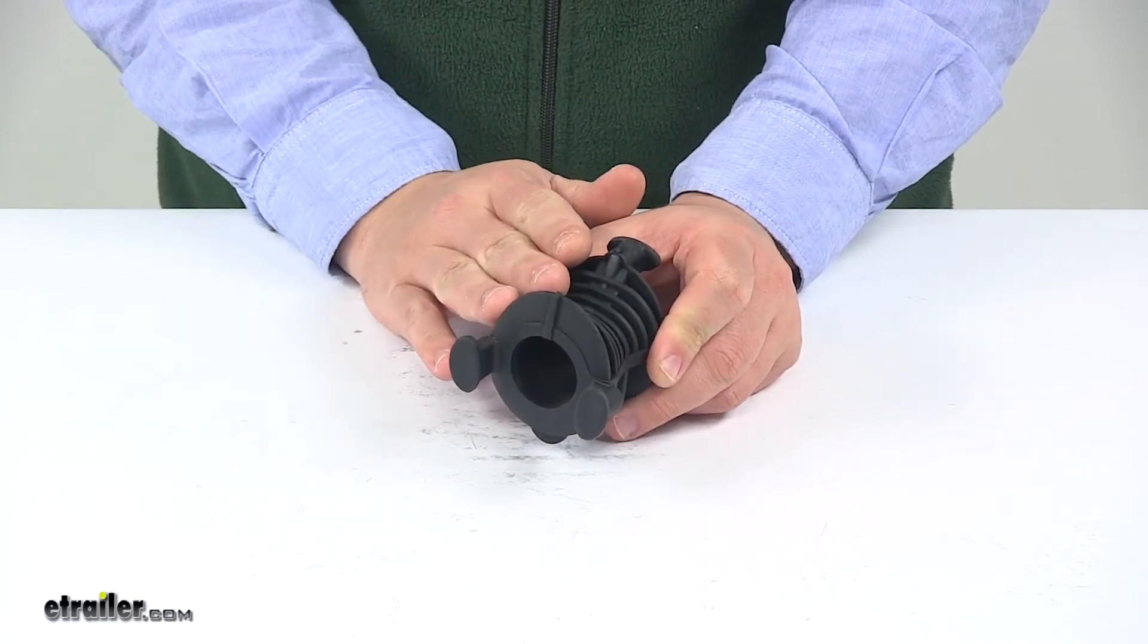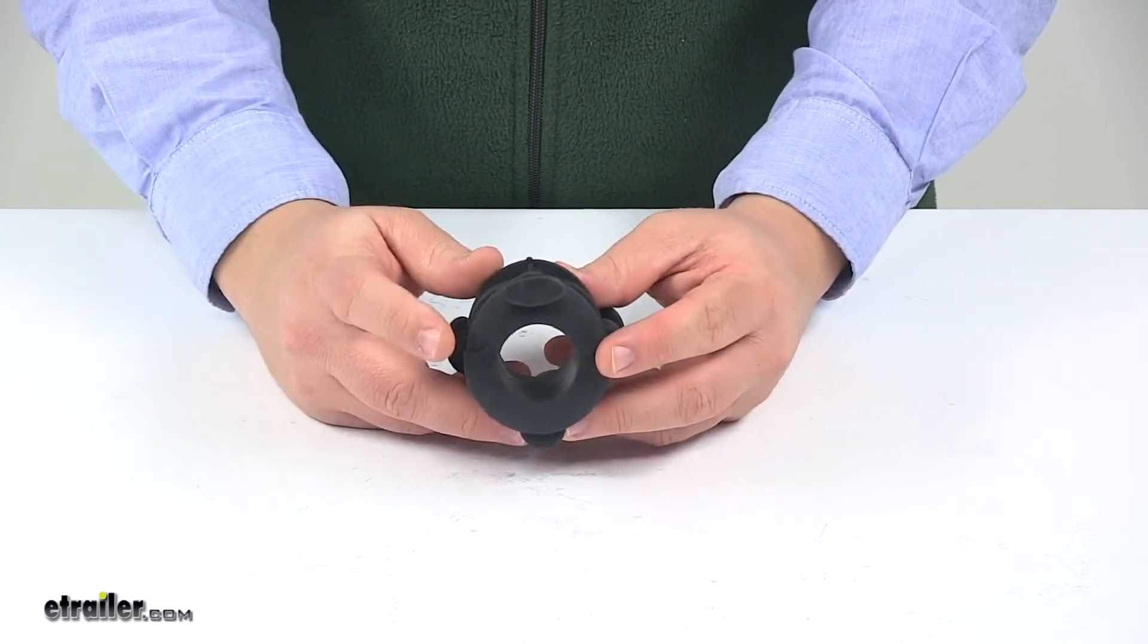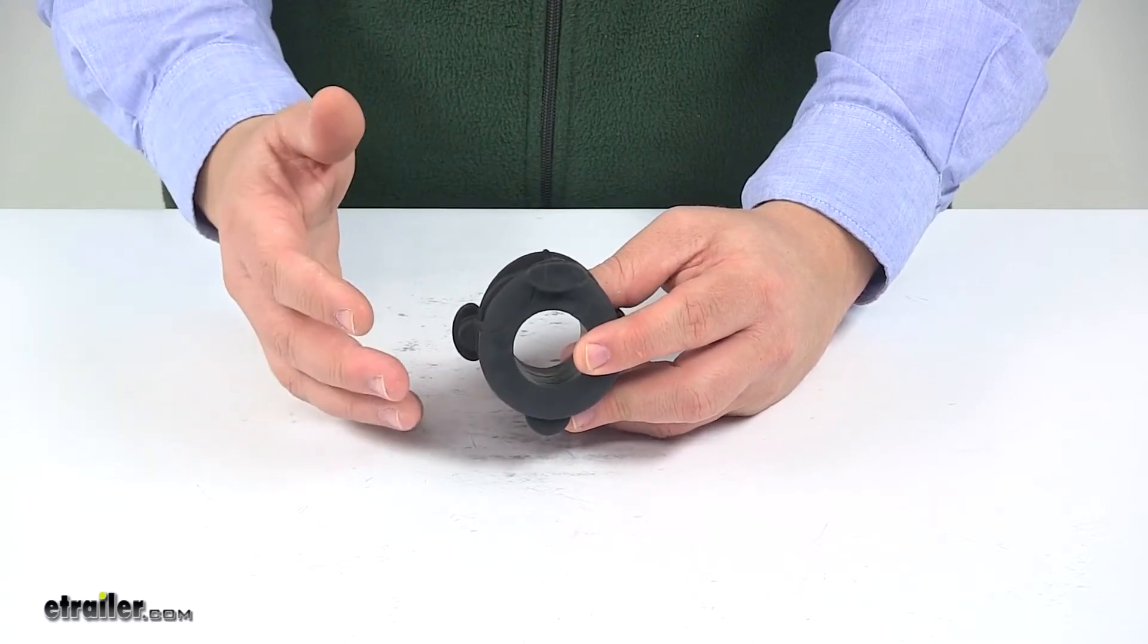To see all the models that it fits, you can check out the product page at eTrailer.com. It simply slides onto the arm of your rack for an easy installation and easy replacement.